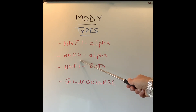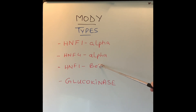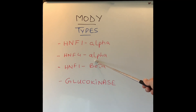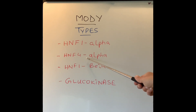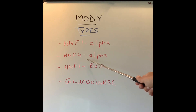HNF4-Alpha is a rarer kind of MODY. Usually, children born with this type are quite heavy — nine pounds or four kilograms and above. They usually develop MODY at a later age, around 24 to 25 years of age, and again it is controlled with tablets rather than requiring insulin.